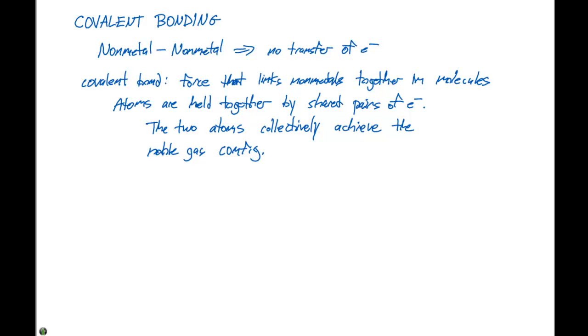The simplest case of covalent bonding happens in homogeneous diatomic molecules. We'll look at four examples here: hydrogen gas (H2), fluorine gas (F2), oxygen gas (O2), and nitrogen gas (N2).